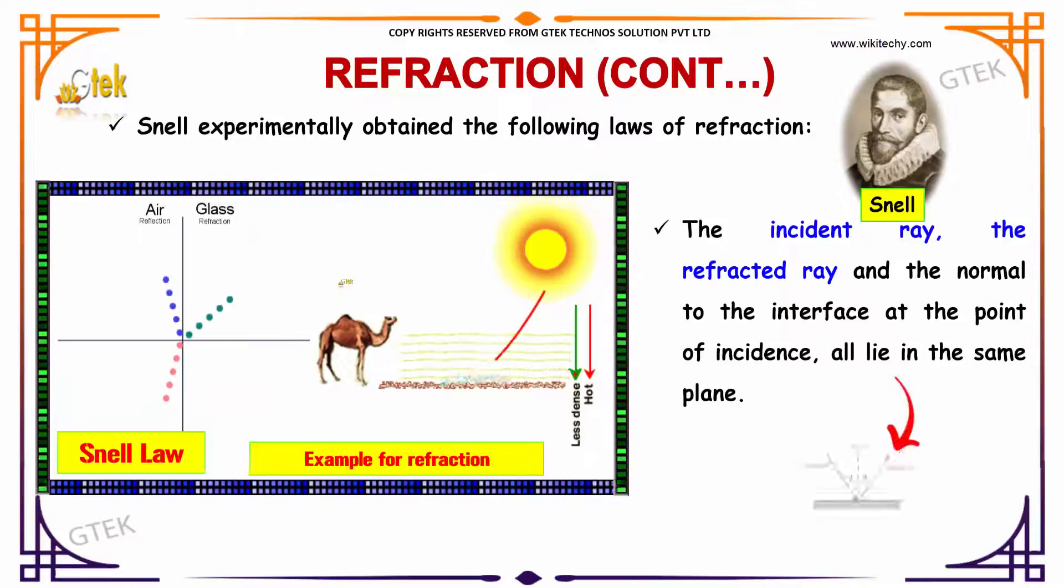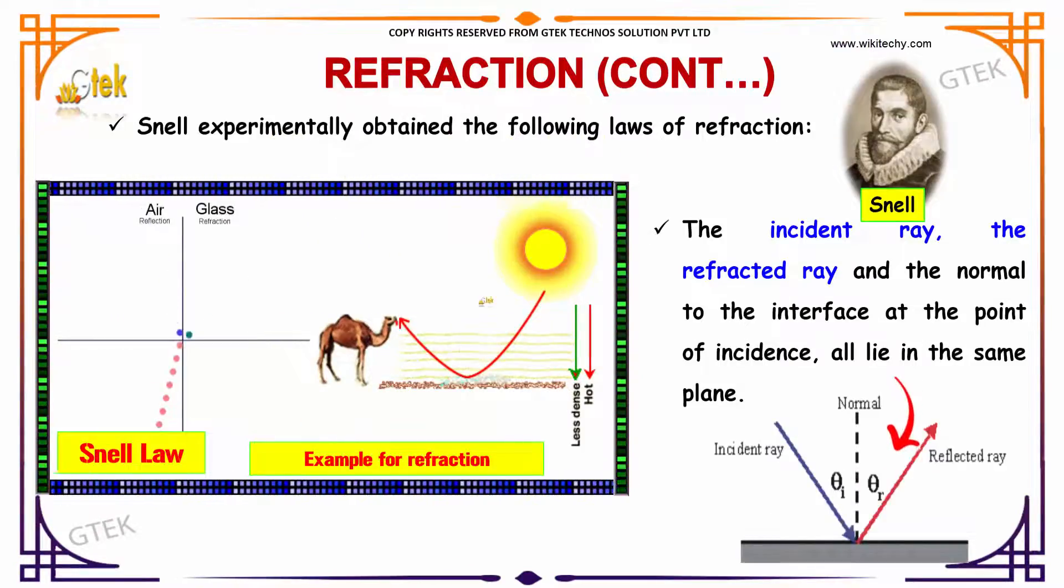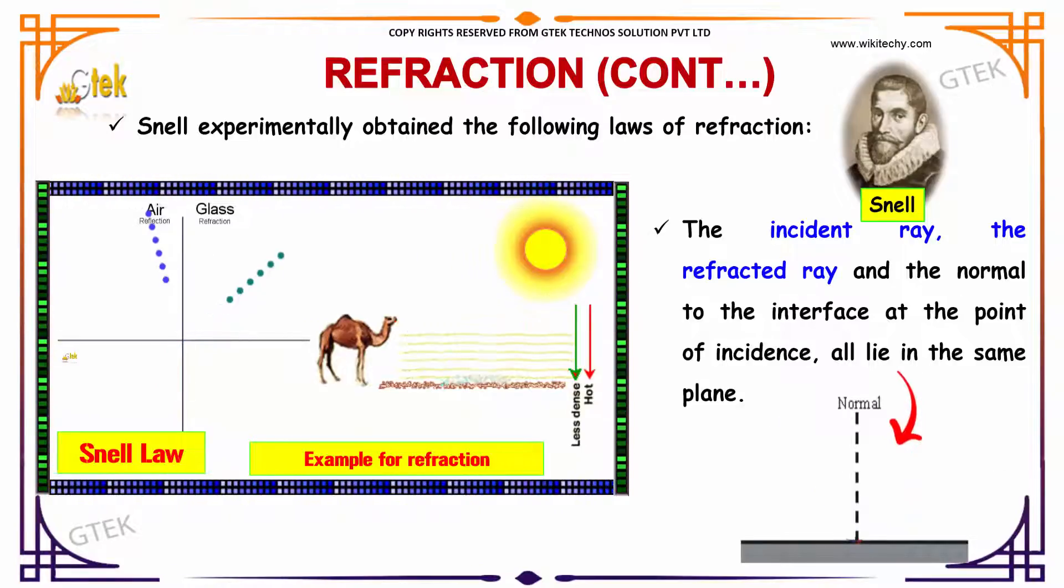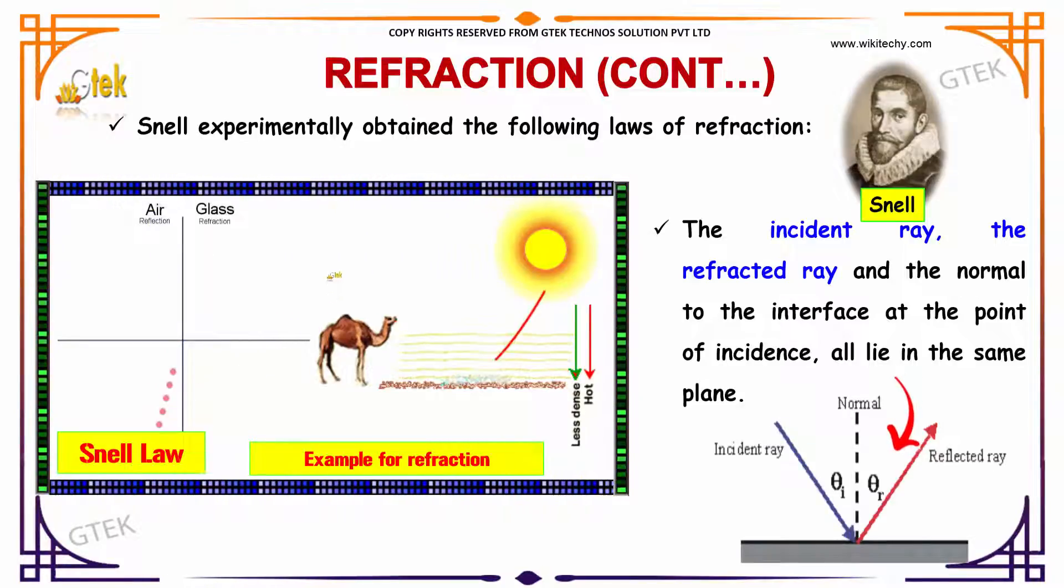Snell experimentally obtained the following laws of refraction. The incident ray, the reflected ray and refracted ray, and the normal to the interface at the point of incidence all lie in the same plane.